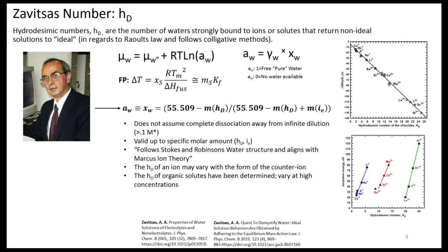Savitsas showed that the hydrodicemic number can be utilized along with the freezing point depression and the cryoscopic function to find the number of strongly bound waters to each mole of solute in solution. The hydrodicemic number is thus a quantity of thermodynamic hydration in order to return a non-ideal solution to Raoult's law, or ideal. Using this method, we don't assume complete dissociation away from infinite dilution, and the hydrodicemic numbers are only valid up to specific molar amounts — at higher concentrations they tend to fall out. This can be observed qualitatively from a freezing point depression curve.